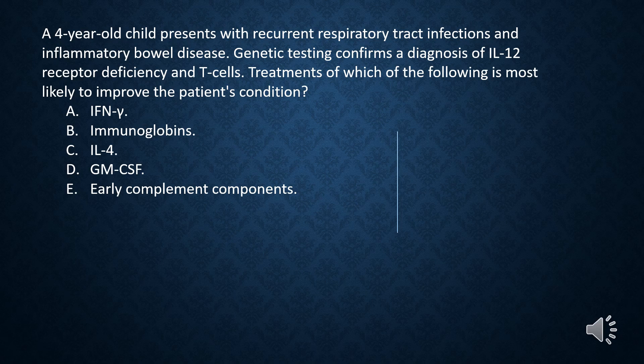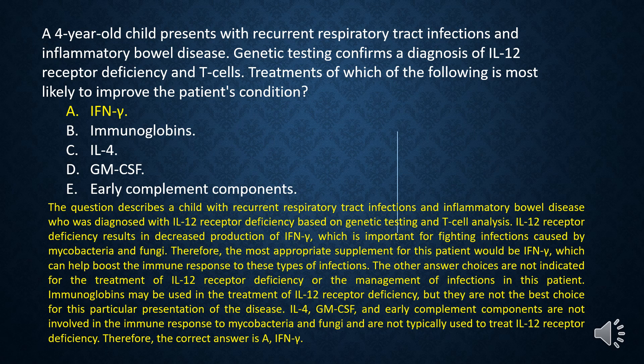A 4-year-old child presents with recurrent respiratory tract infections and inflammatory bowel disease. Genetic testing confirms a diagnosis of IL-12 receptor deficiency. Treatment of which of the following is most likely to improve the patient's condition? A. Interferon gamma. B. Immunoglobulins. C. IL-4. D. GM-CSF. E. Early complement components. The answer is A, interferon gamma. The question describes a child with recurrent respiratory tract infections and inflammatory bowel disease who was diagnosed with IL-12 receptor deficiency based on genetic testing and T-cell analysis.